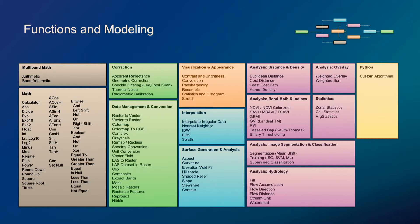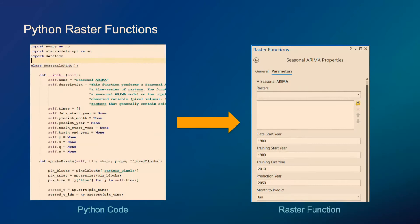If you don't see a raster function listed, you can create your own custom algorithm or custom raster function using Python and the Python raster function framework. The concept is that you can write custom Python code that turns into a raster function with the same kind of interface you see in Pro or ArcMap, giving you that user interface and easy interaction to apply it to individual images or a mosaic data set. Here I show a seasonal ARIMA function with some parameters that become my raster function.